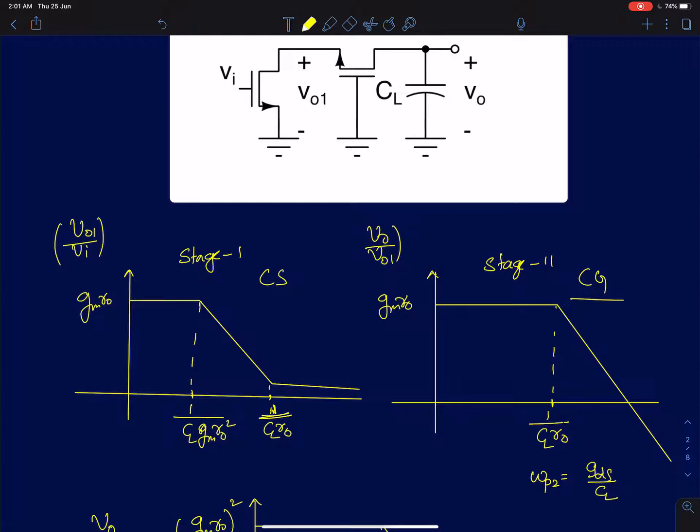Hi everyone, previously we discussed the frequency response of a cascode amplifier. We said that when we analyze the cascode amplifier as a cascade of two single-stage amplifiers, which is a common source and a common gate amplifier, the dominant pole actually occurs at the output of the first stage, which is the intermediate node voltage VO1 shown here.